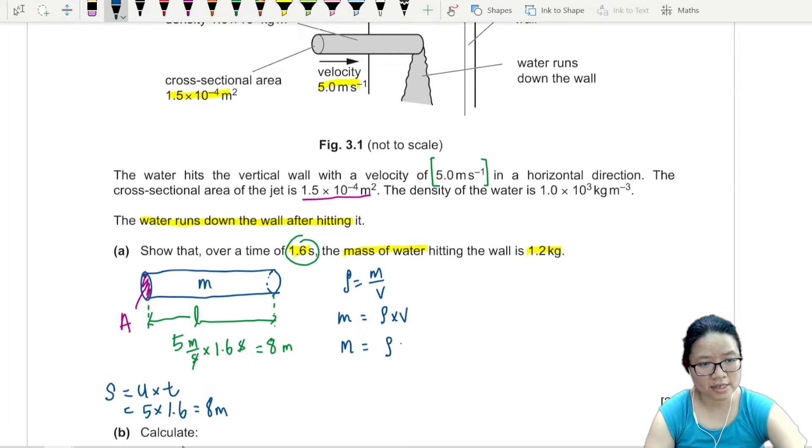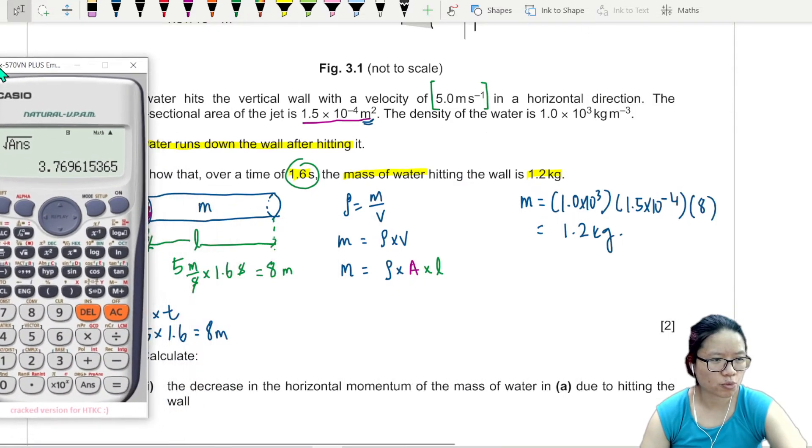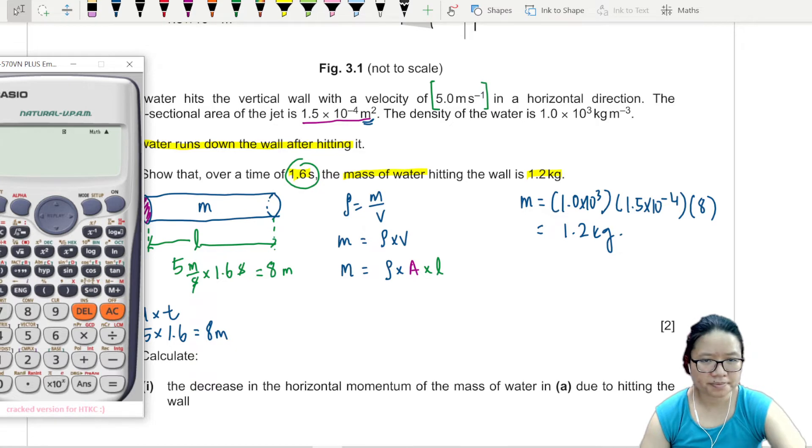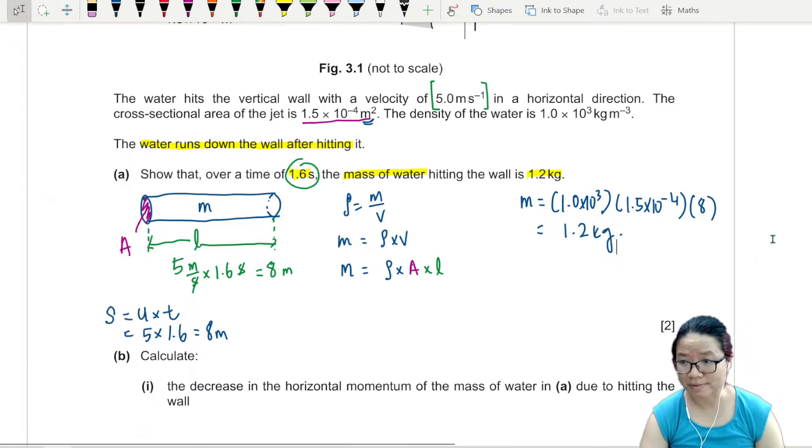So from here, your mass is density times area times length. So mass will be density 1.0 times 10^3, area 1.5 times 10^-4, double check to make sure it is in SI, and finally the length is 8 meter. So if we multiply all of this, you will get 1.2 kg. Because 10^3 and 10^-4 is 10^-1, so 1.5 times 8 is 12, yeah 1.2 kg.